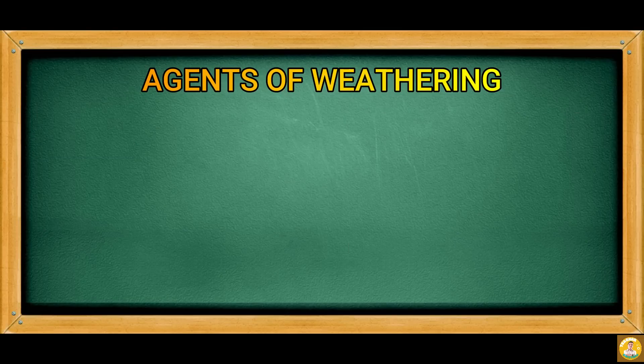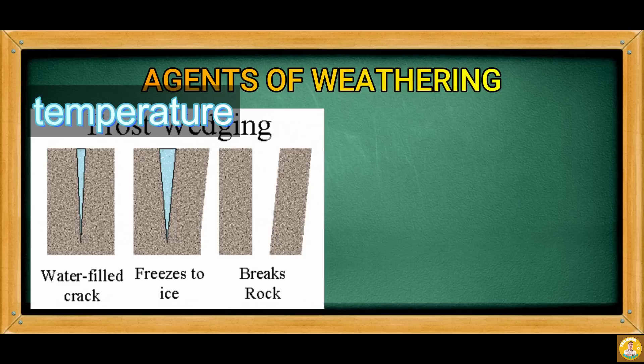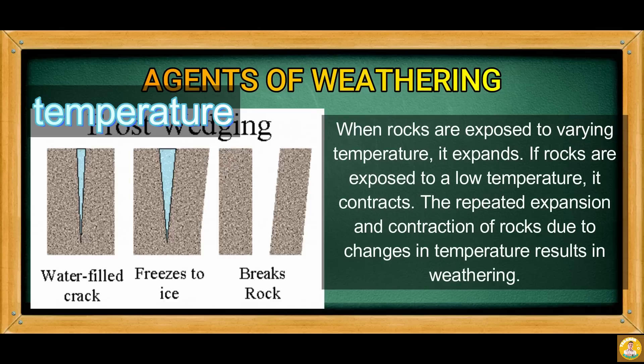Next, we have temperature. When rocks are exposed to varying temperature, they expand. If rocks are exposed to a low temperature, they contract. The repeated expansion and contraction of rocks due to changes in temperature results in weathering.